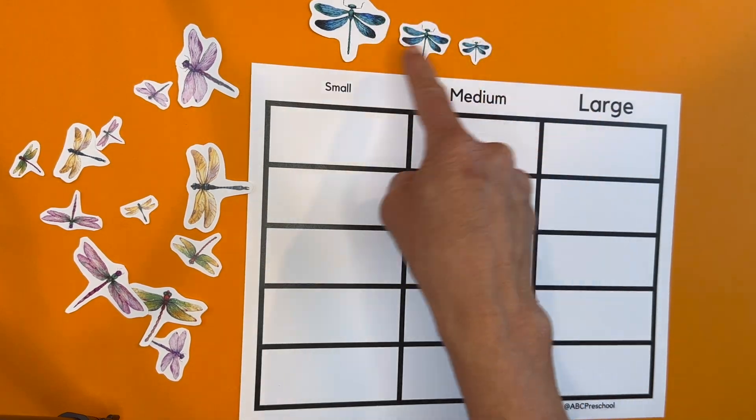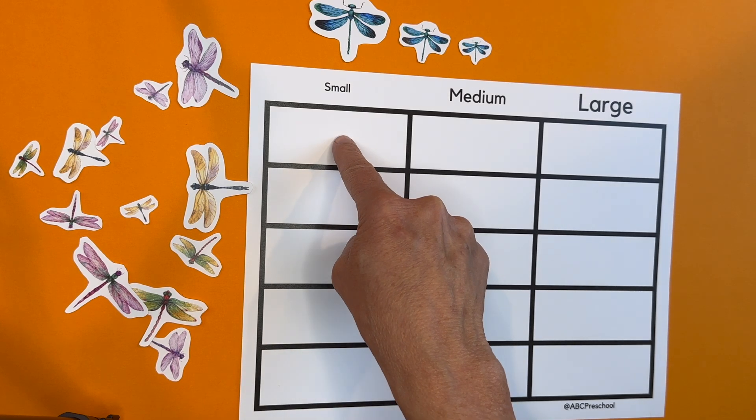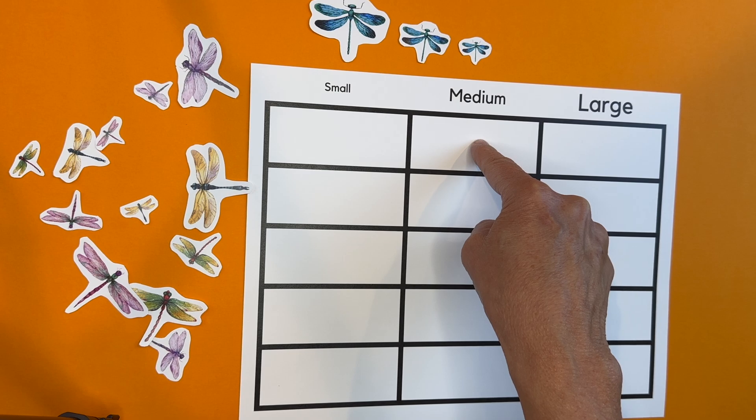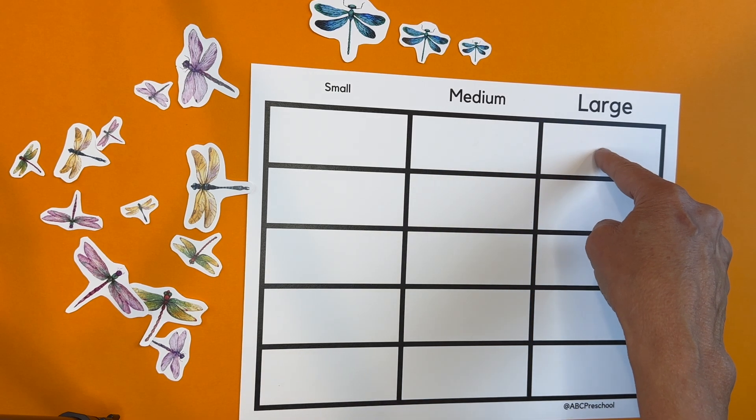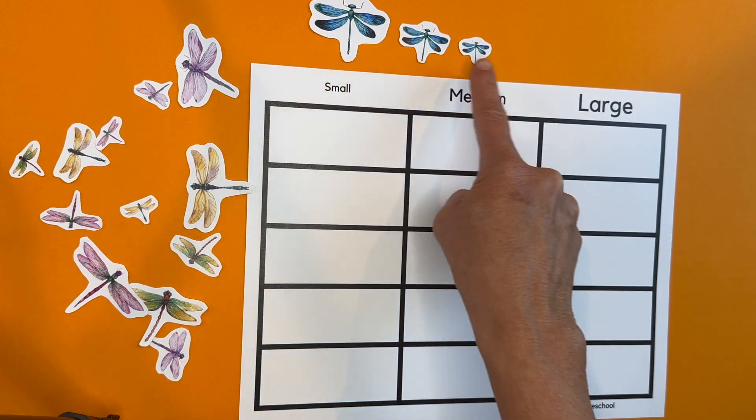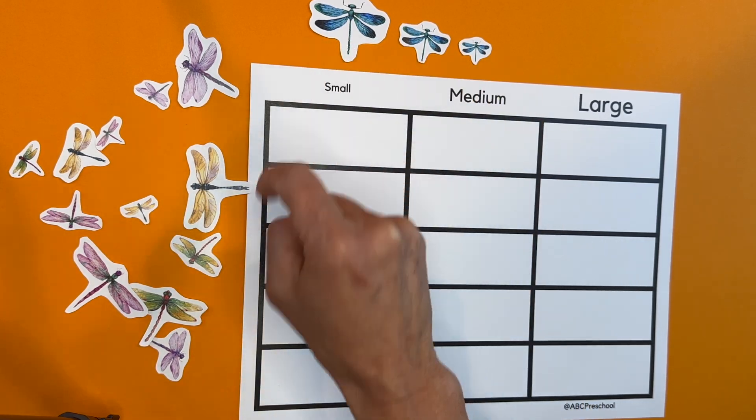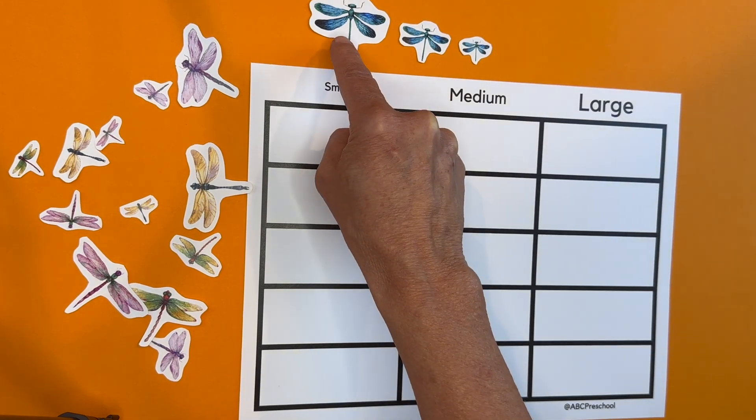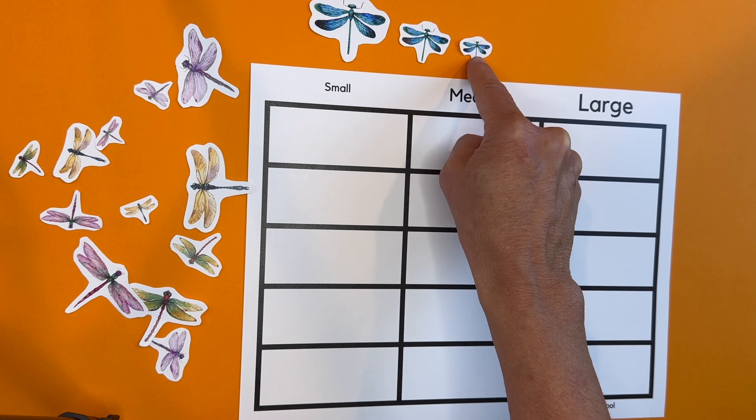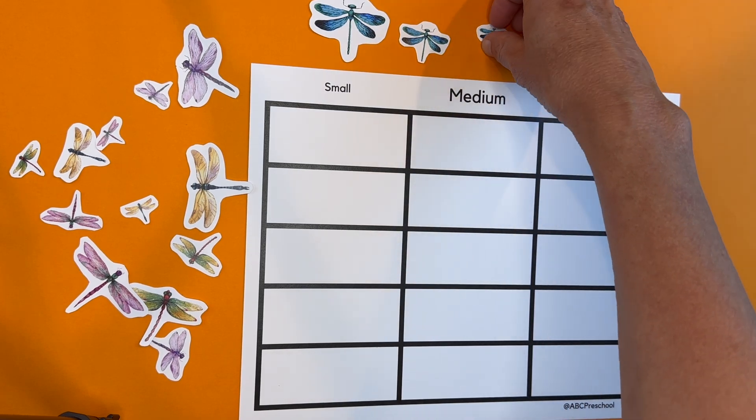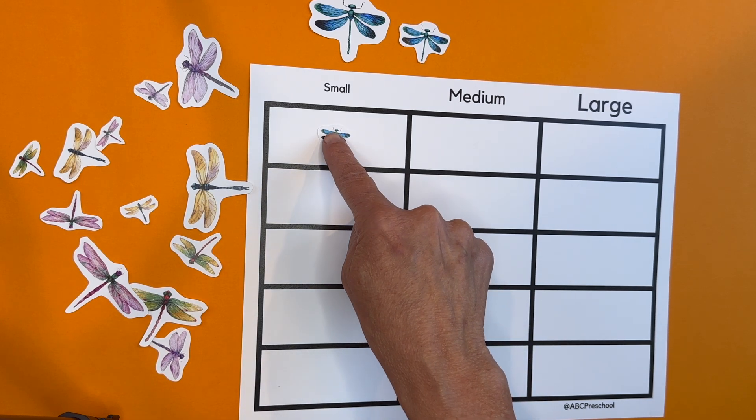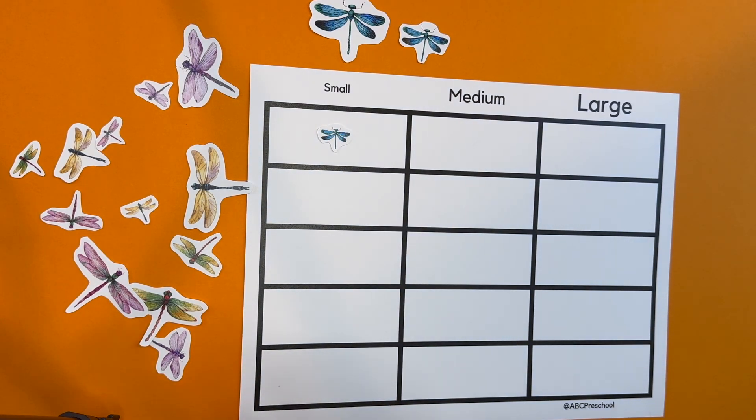So we need to put the smallest one here, the next one a little bit bigger, the medium size here, and the largest one there. Okay, I'll point to these, and you tell me when I'm at the smallest dragonfly. Tell me when to stop. Not this one. This one right here? Yeah? Okay. Let's take this little dragonfly, and we'll put him right there.